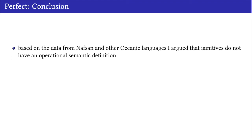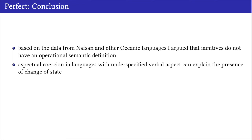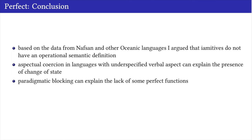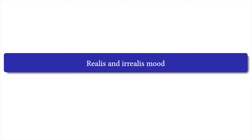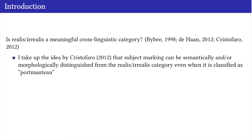The conclusion regarding perfect is that based on this data, yamitives do not seem to have an operational semantic definition needed to use it as a cross-linguistic category—because they are defined by a change of state meaning that does not exist in these languages to the exclusion of other typical perfect meanings. Aspectual coercion can explain the presence of change of state; paradigmatic blocking can explain the lack of certain perfect functions even when dealing with a perfect category; and meaning compatibility can explain overlaps in distribution between perfect and already.